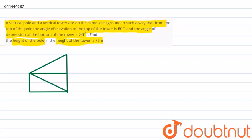So here, let tower be AB and pole be CD. The angle of elevation is 60 degrees and the angle of depression is 30 degrees, and we have been given that the length of AB is 75 meters. Therefore, let us assume that let AB be the tower and let CD be the pole.